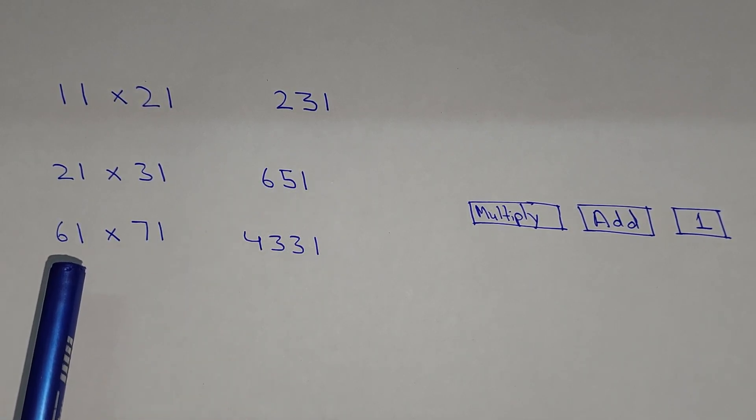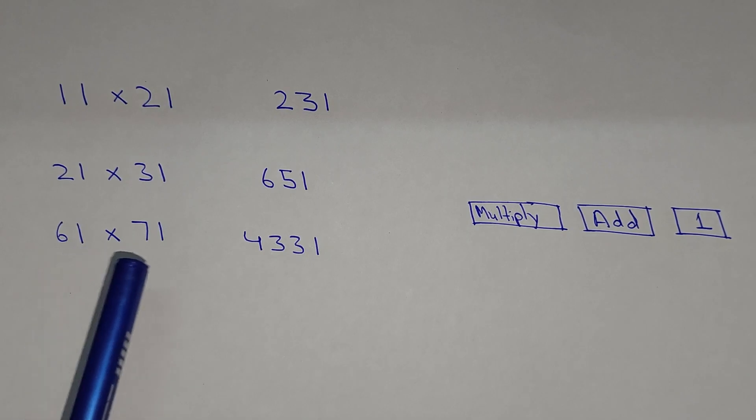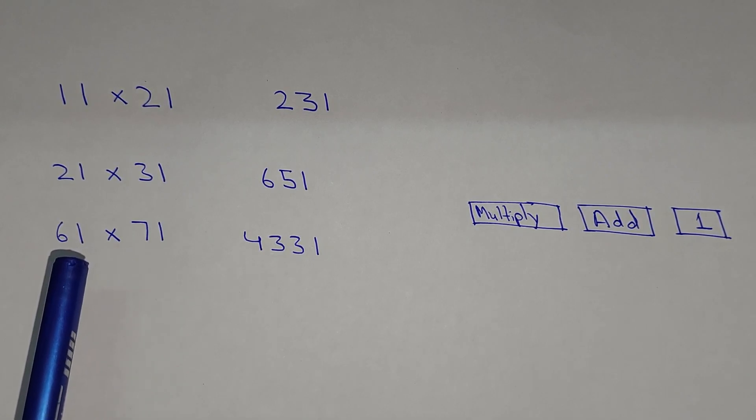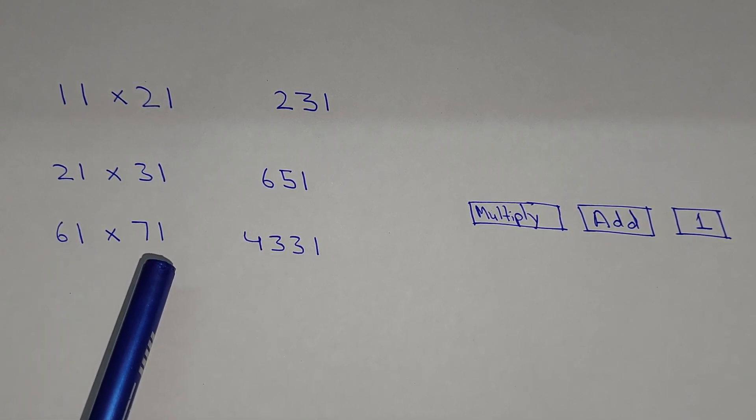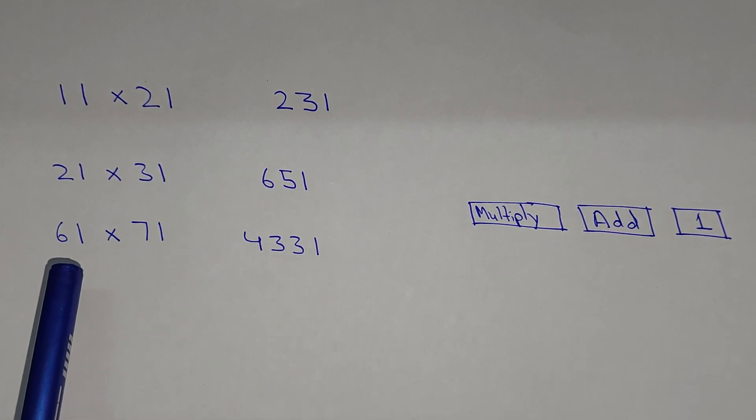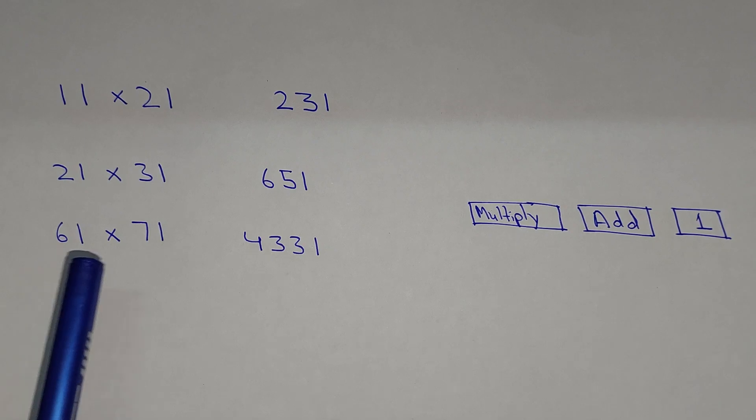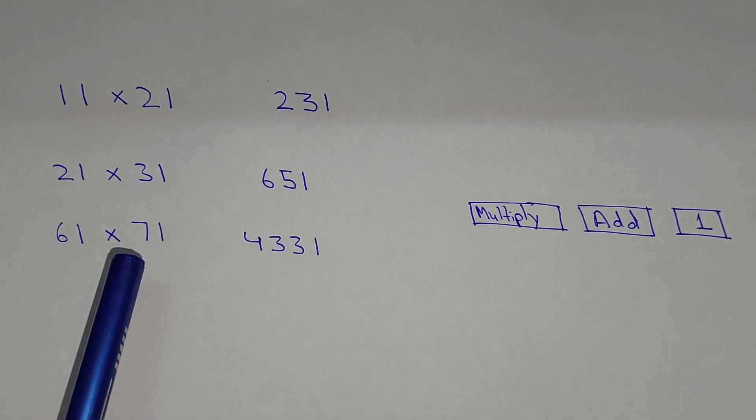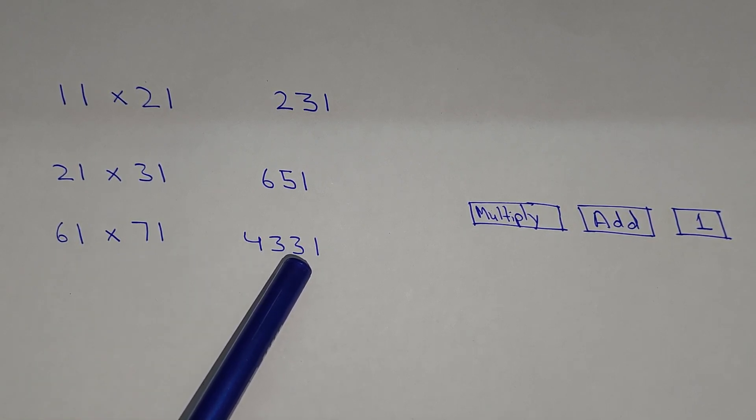And here we have, so this is a little bit different, 61 multiply by 71. First of all we will write 1 over here, and then we will add, so 6 plus 7, that will be 13. The answer comes in two digits because 13 is the answer, so we will write 3 over here and we carry over 1.